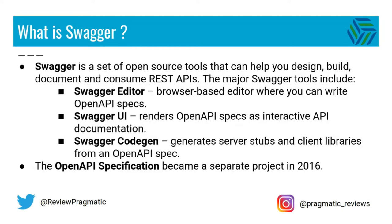Swagger is a set of open source tools that can help you design, build, document and consume REST APIs. The major Swagger tools include the Swagger Editor, a browser-based editor where you can write OpenAPI specs; Swagger UI that renders OpenAPI specs as interactive API documentation; and Swagger Codegen that generates server stubs and client libraries from an OpenAPI spec.